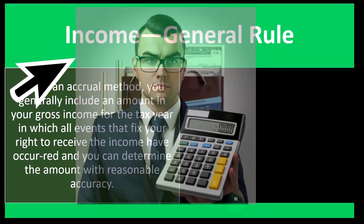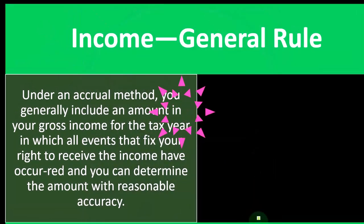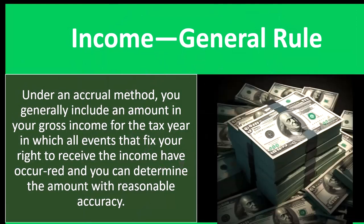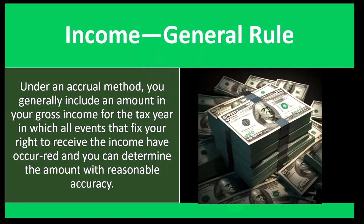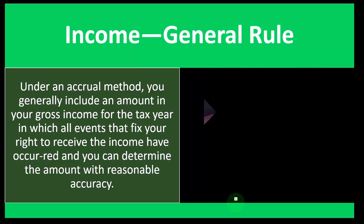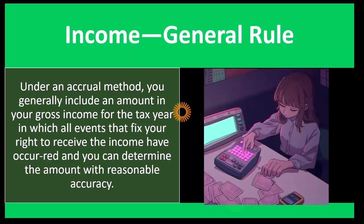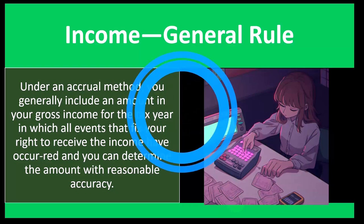Income general rule: under an accrual method, you generally include an amount in gross income for the tax year in which all the events that fix your right to receive the income have occurred and you can determine the amount with reasonable accuracy. You've essentially earned the income and can determine how much. In bookkeeping, you'd commonly issue an invoice — increasing accounts receivable with the other side going to revenue at that point in time. On a cash-based system, you wouldn't record it until you received the cash.